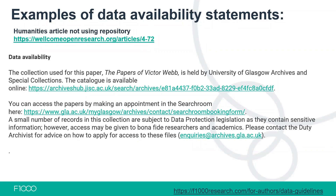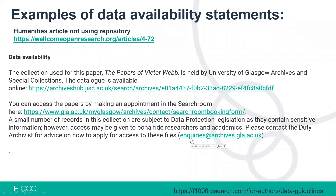For a humanities article which does not use a repository, the authors have given clear information of where they got their data from — for example, a collection held by the University of Glasgow Archives and Special Collections — with a clear link to where you can access it, along with information on any restrictions on accessing the data and how you can gain access, including a clear email address.